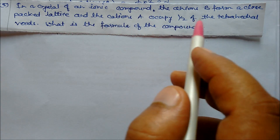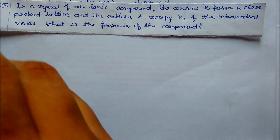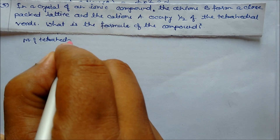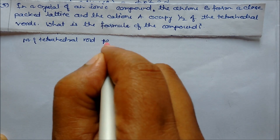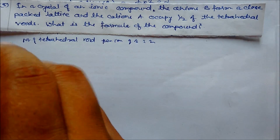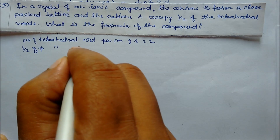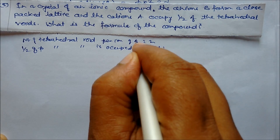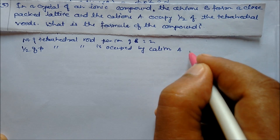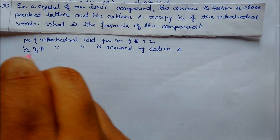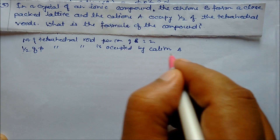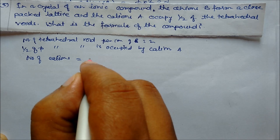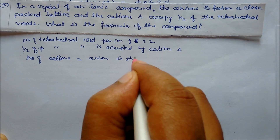Next problem: In a crystal of ionic compound where anions B form a close-packed structure, cations A occupy half of the tetrahedral voids. What is the formula? The number of tetrahedral voids per ion of B is 2, and half of those tetrahedral voids are occupied by cation A. So the number of cations A equals the number of anions B in the crystal.